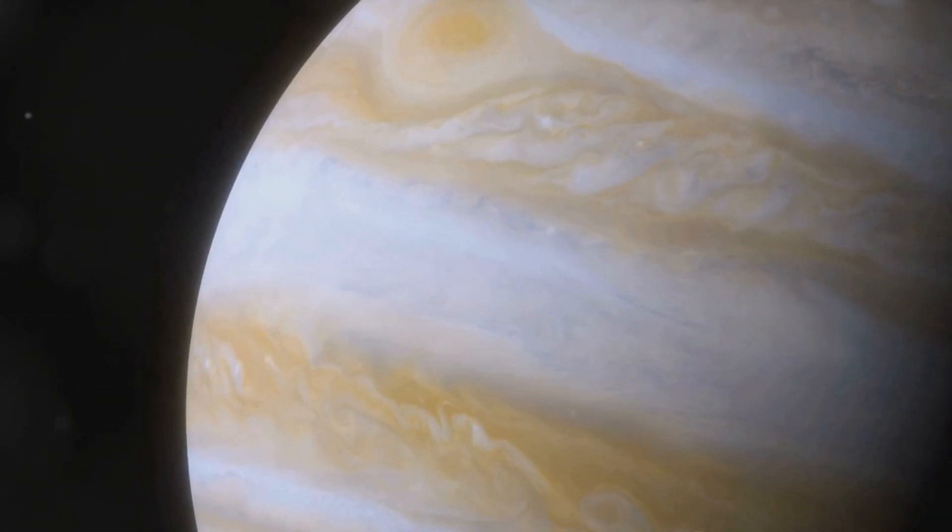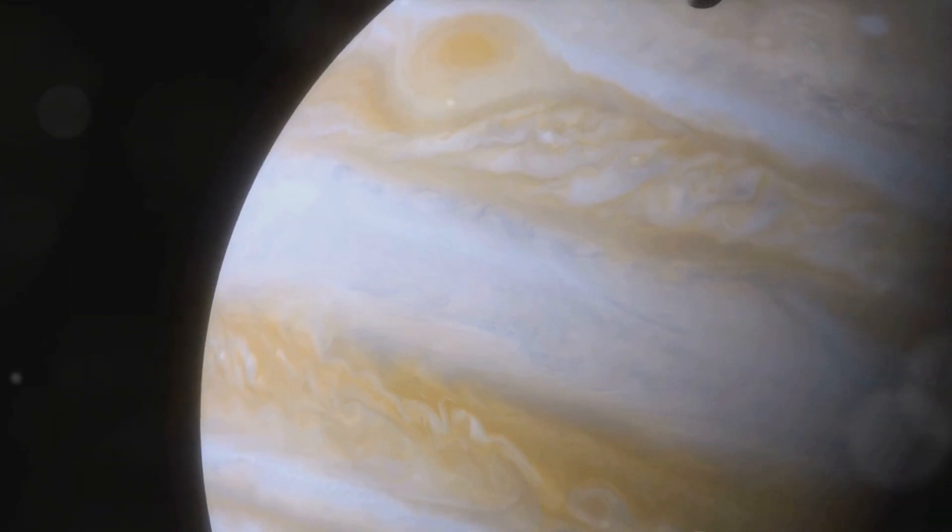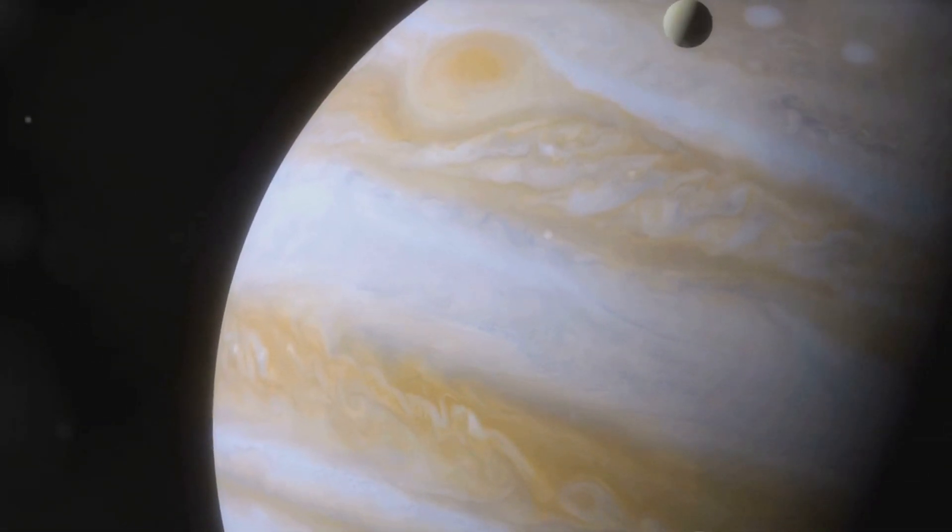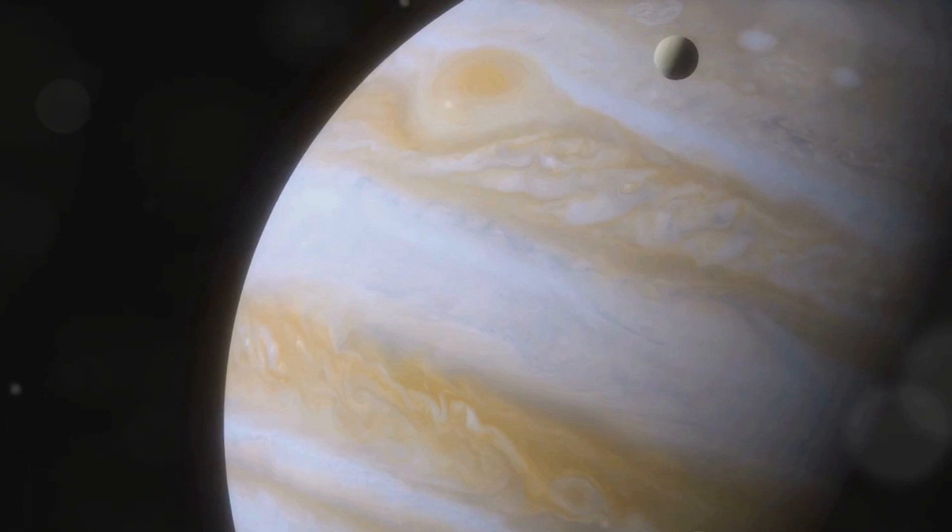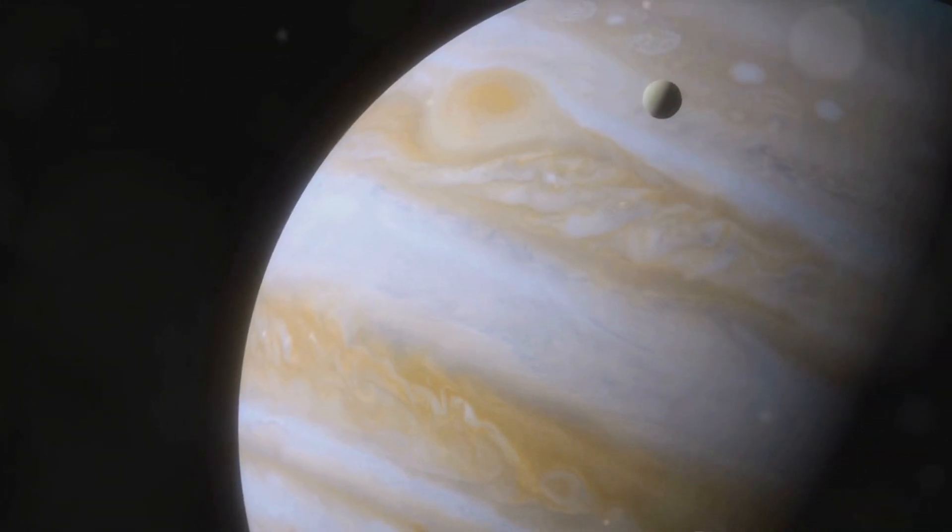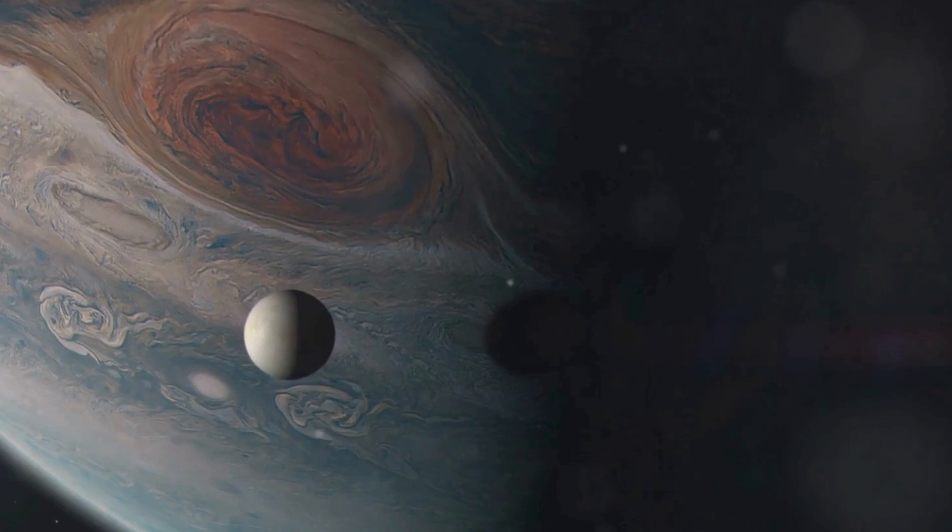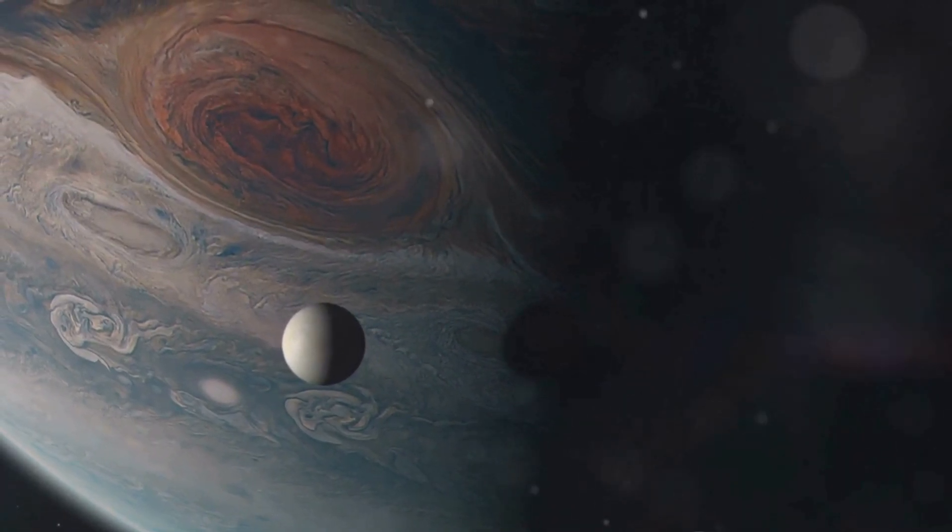But let's focus on the triple eclipse. It's a rare event, even by cosmic standards. The orbits of Io, Europa, and Ganymede need to align perfectly with the sun for this spectacle to occur. And when they do, each moon casts a shadow on Jupiter's swirling cloud tops.